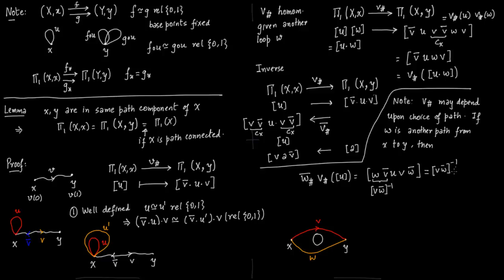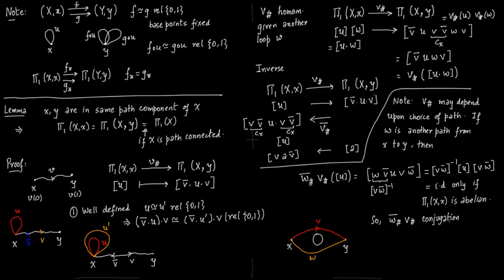So we can rewrite this: instead of w·v̄ we write v·w̄ inverse, giving (v·w̄)⁻¹·u·(v·w̄). This is basically a conjugation — conjugation by the element v·w̄ in the fundamental group.